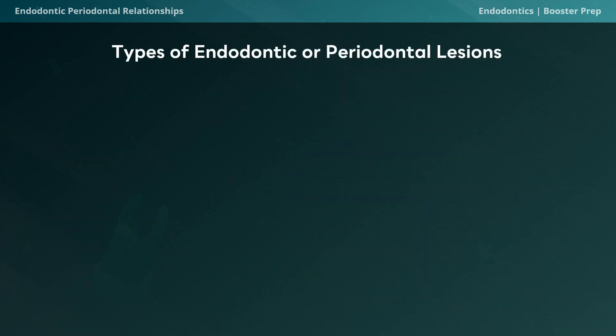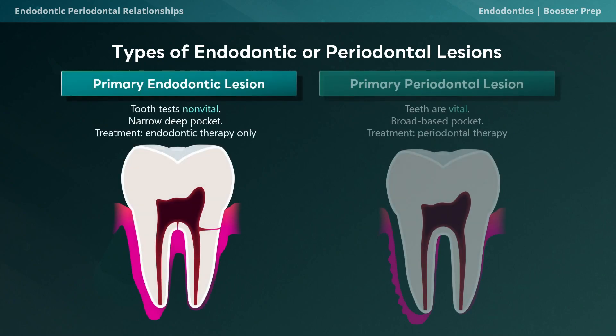Let's quickly review the categories of endoperiodonal lesions. These are situations where the tooth presents with both an endodontic and a periodontal lesion, and we're left to figure out which happened first — the endo lesion or the perio lesion — or whether they happened simultaneously. Let's trace the progression of what happens when dealing with an endoperiodonal lesion that had a primary endo beginning.